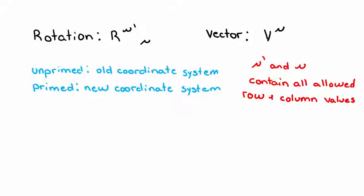Here, the indices mu' and mu contain all the allowed values for both rows and columns. So, for example, if a matrix contained 6 rows, mu' would include the numbers 1 through 6, and if that matrix had 4 columns, mu would include the numbers 1 through 4. We still want to find that new or primed vector that results from the multiplication of this matrix and this vector. We write this by saying V mu, or the vector in the old coordinate system, transforms to V mu', or the vector in the new coordinate system.